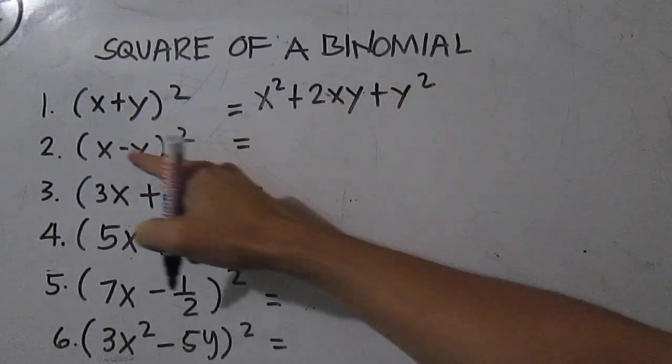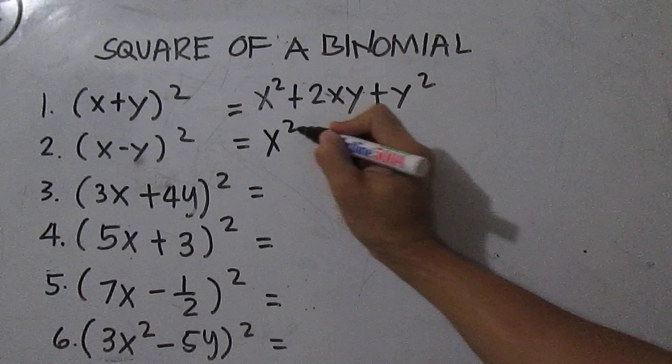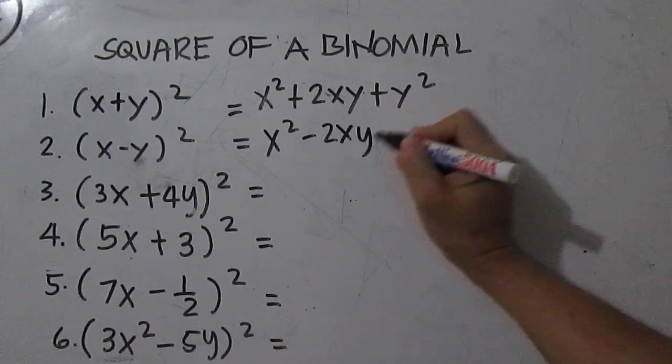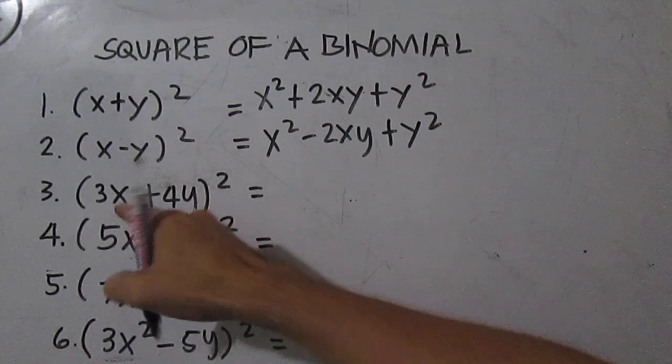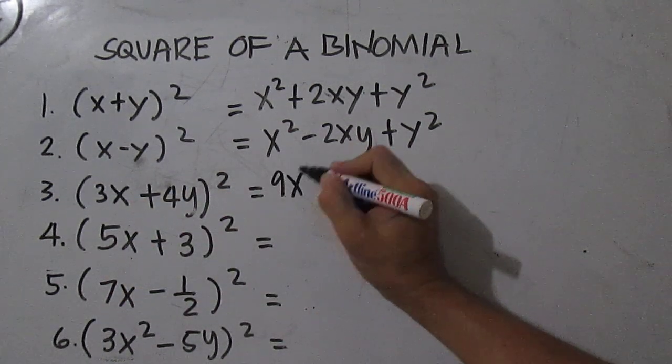Number two is just x squared minus 2xy plus y squared. Number three: 3x times 3x is 9x squared.